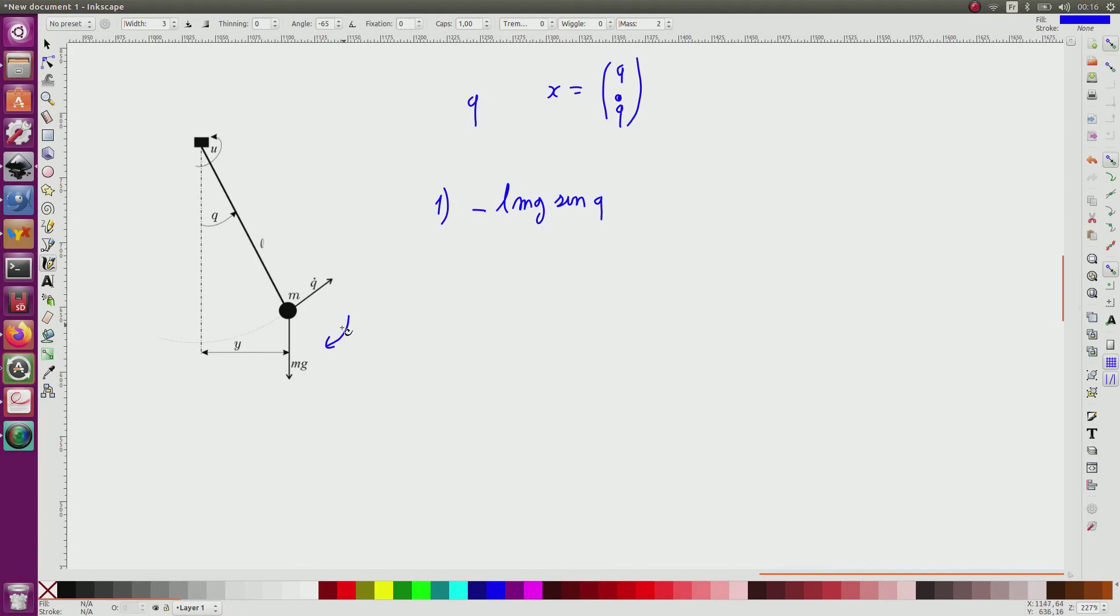So it corresponds to this torque and now there is another torque which corresponds to U, which is positive here, plus U, equal to the inertia J multiplied by the acceleration Q dot dot.